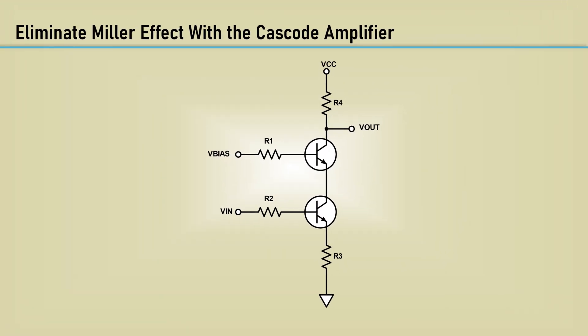There is a way to eliminate the Miller effect in amplifiers. It's the cascode amplifier. It's a common emitter amplifier followed by a common bass amplifier. The gain of the common emitter amplifier affected by the Miller effect is set to a gain of 1, usually, to minimize the Miller effect. The following common bass amplifier is not affected by the Miller effect.